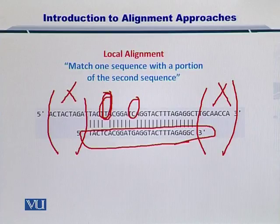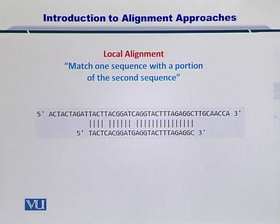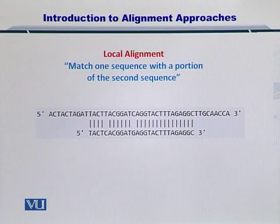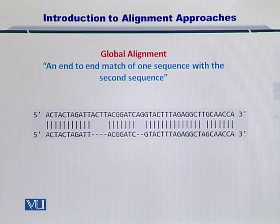This is generally called local alignment. Local alignment is a very useful concept and allows you to search for specific shorter sequences in longer sequences in DNA or proteins.